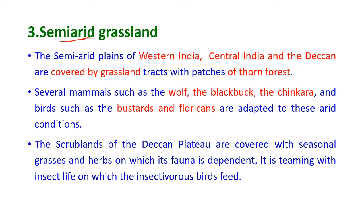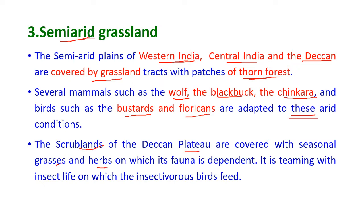Next is the semi-arid grassland. The semi-arid plains of western India, central India, and the Deccan are covered by grassland tracts with patches of thorn forest. Several mammals such as the wolf, the blackbuck, and the chinkara, and birds such as the bustards and floricans are adapted to these arid conditions. The scrublands of the Deccan Plateau are covered with seasonal grasses and herbs on which its fauna is dependent.